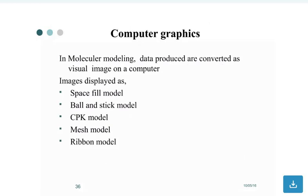Computer graphics: how do we use computer graphics in molecular modeling? Data produced are converted as visual images on a computer. Images are displayed as space-filled models, ball and stick models, CPK models, mesh models, and ribbon models.